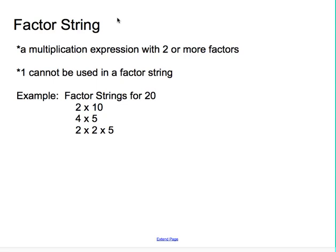So, for example, factor strings for 20. We could have 2 times 10. There we have a multiplication expression with two factors. 4 times 5 is also a factor string for 20. 2 times 2 times 5 is also a factor string for 20. If we multiply out these expressions, the answer, the product, will be 20.